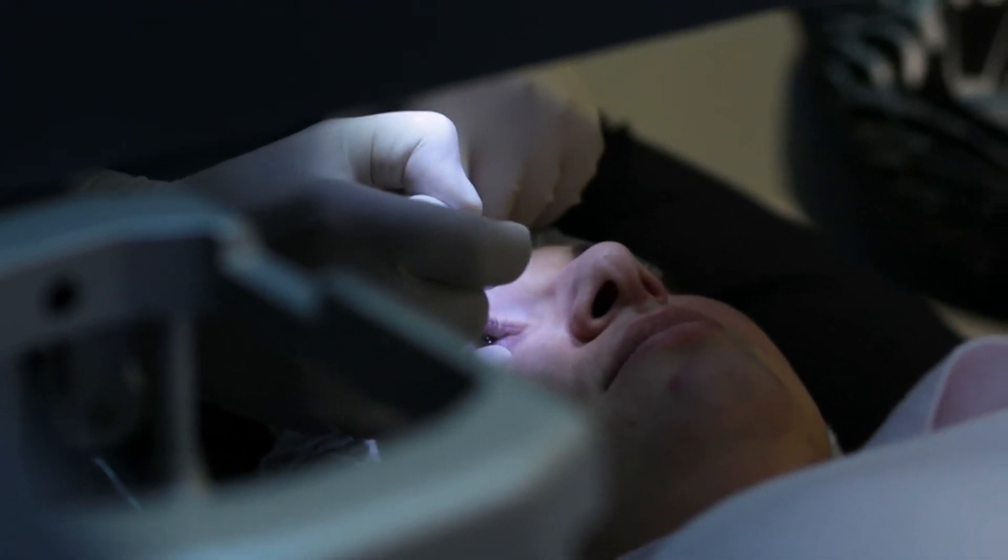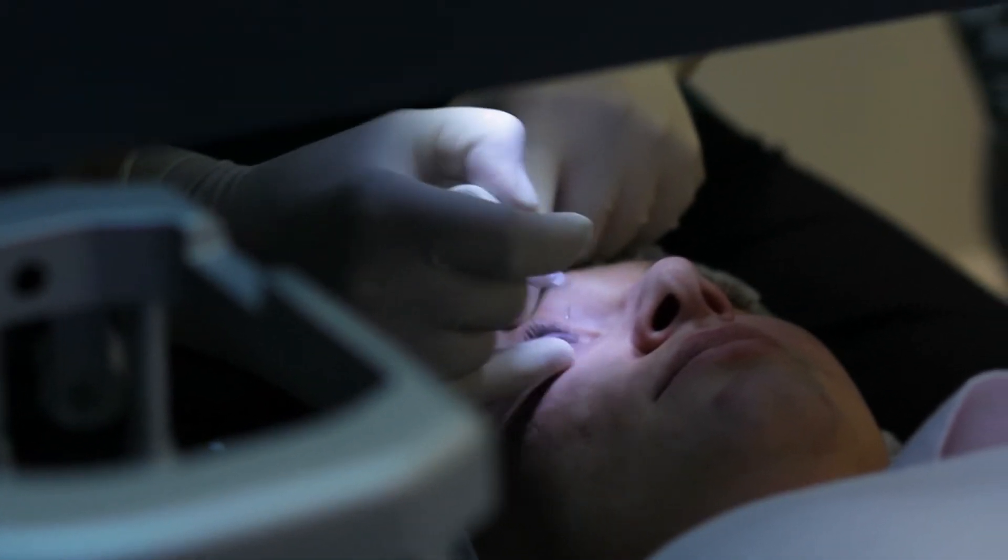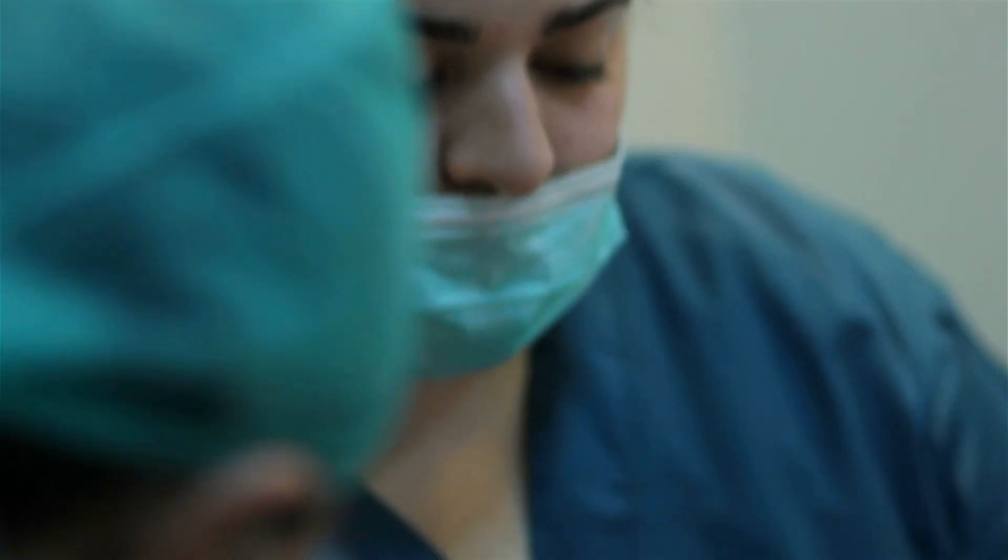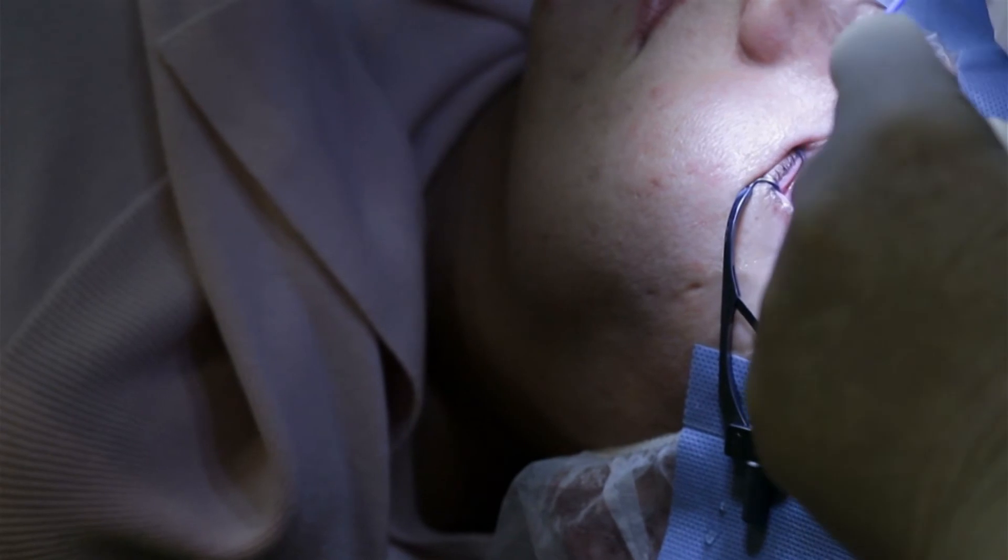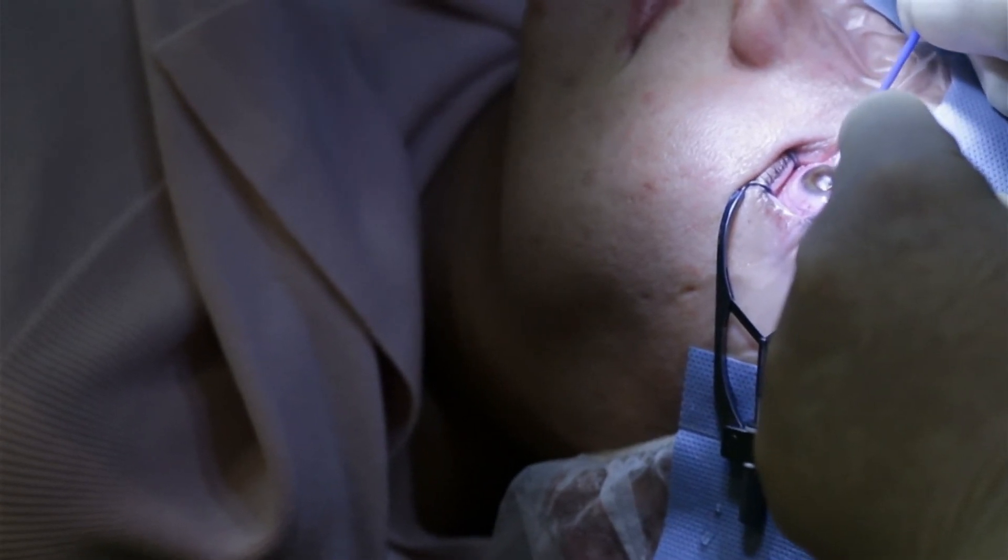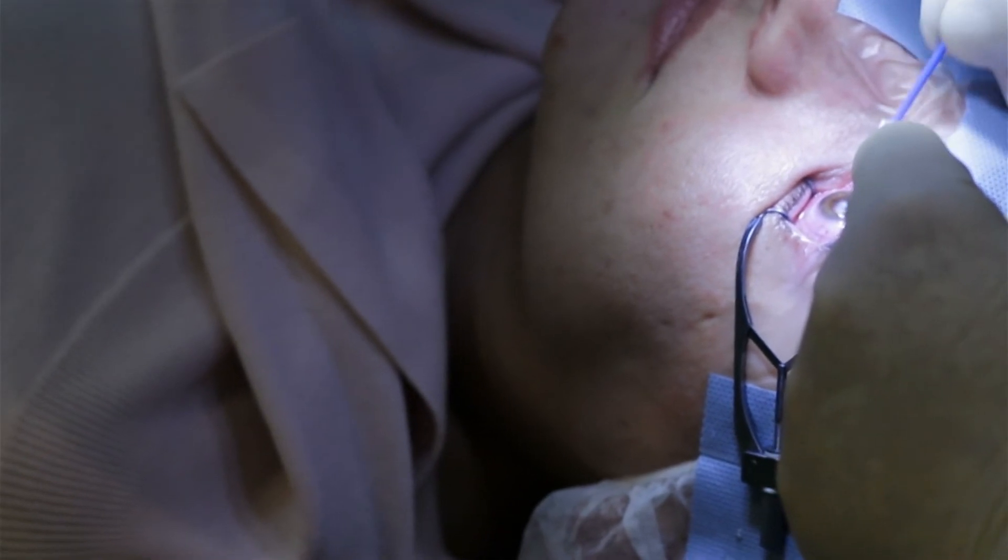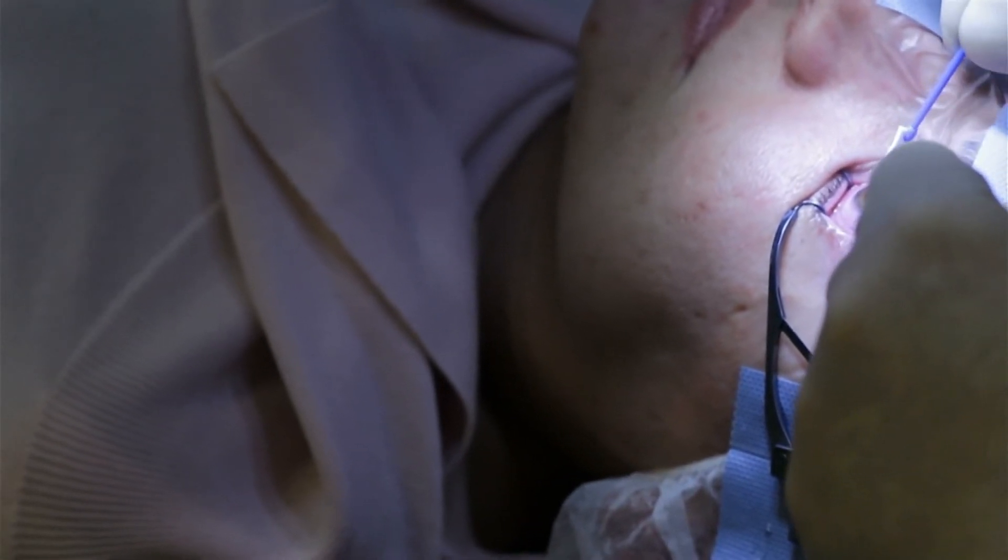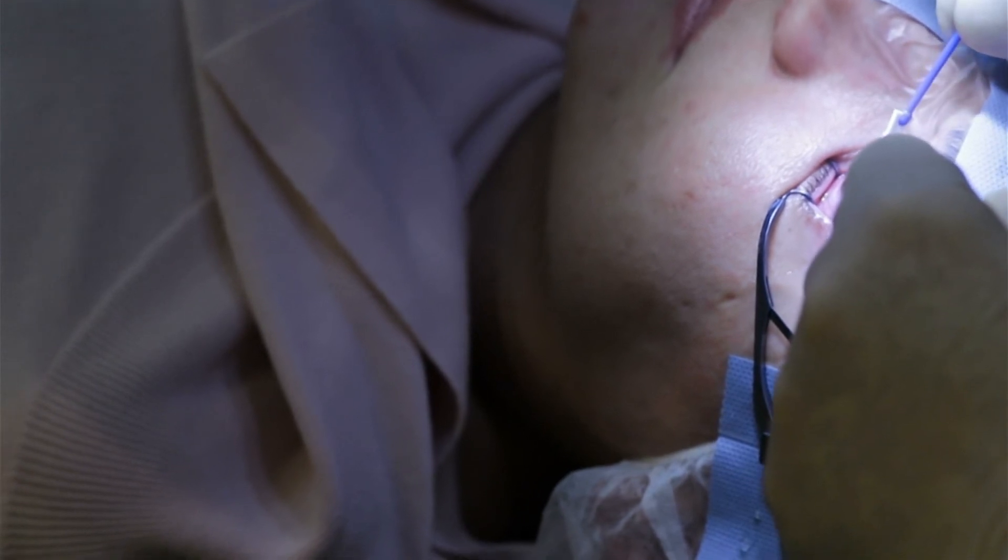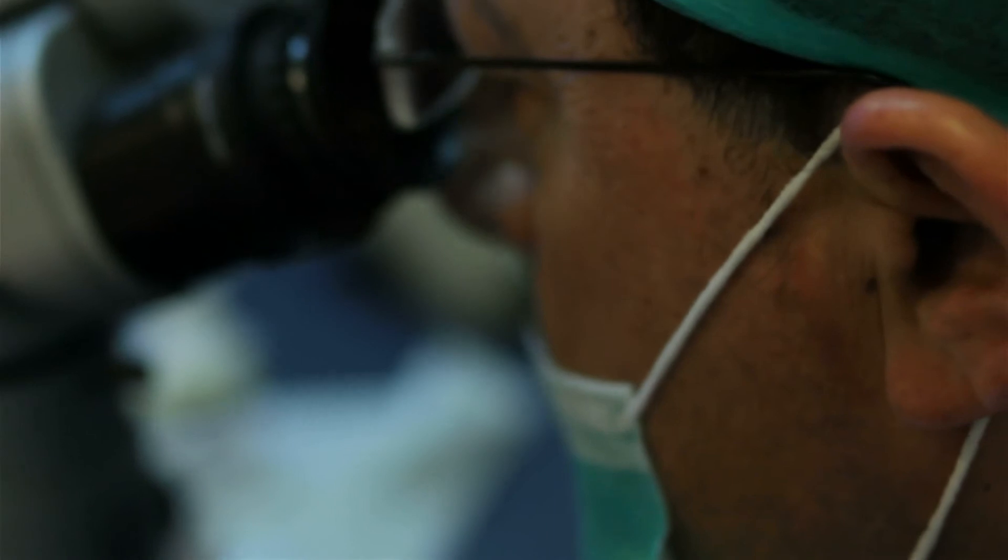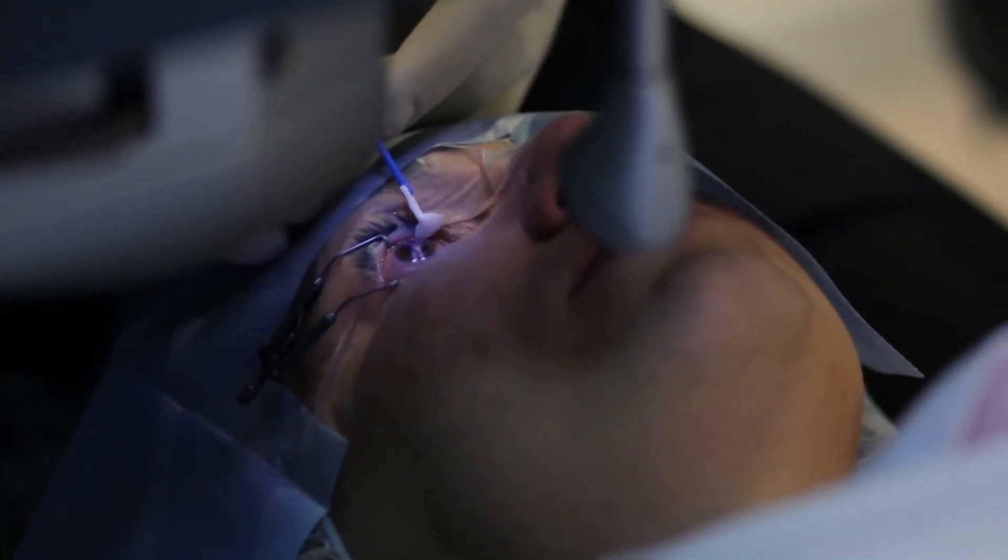We put some more drops and anesthetic drops in the eyes. You don't need any injection. Then we put the speculum, which is this small instrument that holds the eye open. So this is a very delicate flap that I created from the surface of the cornea. And this is the eye tracker. This machine, which is called a microkeratome, cuts very thin flaps and it's very safe.